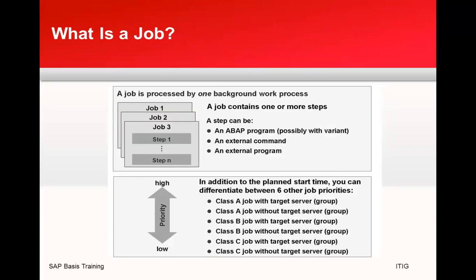What is a job? A job is processed by one background job process. A job consists of one or many steps. A single step can be an ABAP program, possibly with a variant, an external command, or an external program. In addition to the planned start time, you can differentiate between six job priorities — that is, class A with target server group, and class A without target server group.